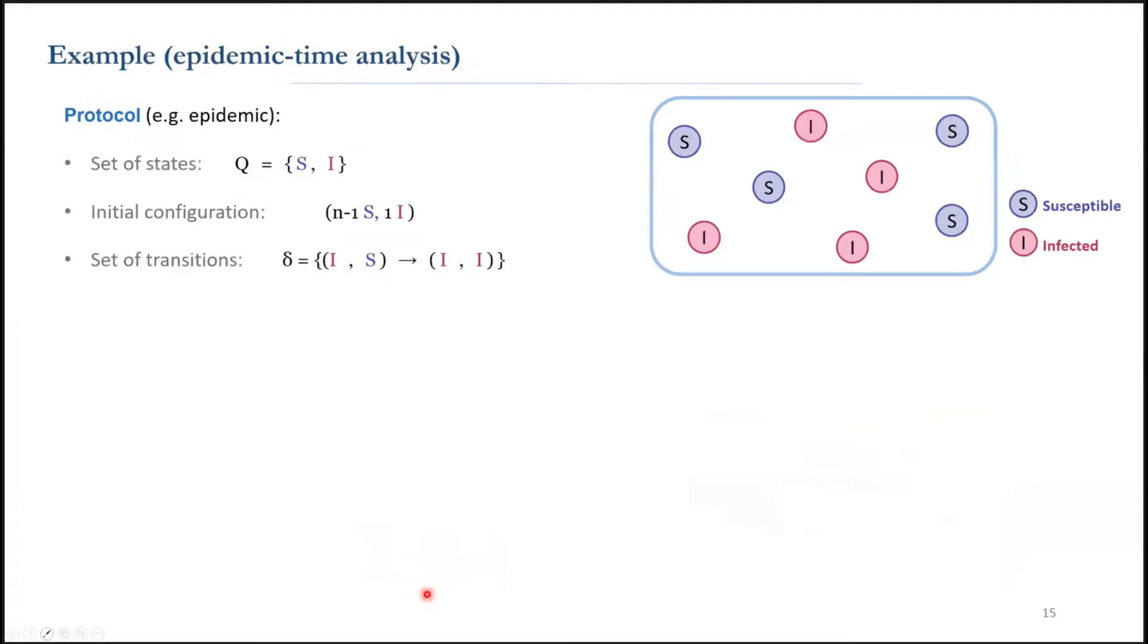Similar to all models of computation, in population protocols, we're interested in fast protocols that use the minimum amount of memory. The memory usage for this specific example is two states, but how much time do they take to fully spread the epidemic?